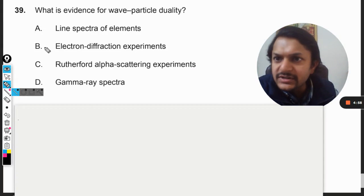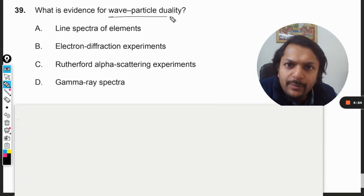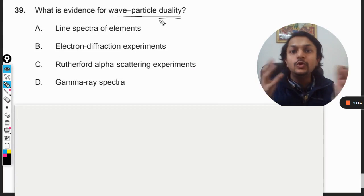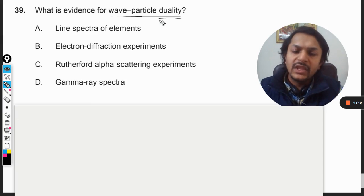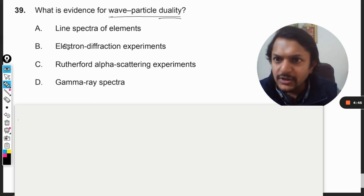Okay dear students, let's see what is in this question: What is evidence for wave-particle duality? That is the dual nature of particles. Now let's see the options.